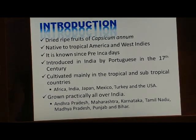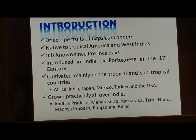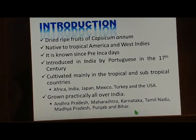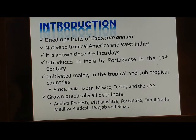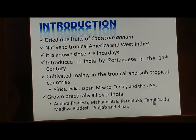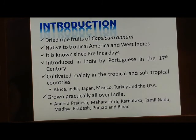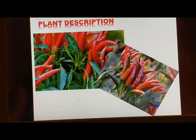Chilies are now cultivated mainly in tropical and subtropical countries like Africa, India, Japan, Mexico, Turkey, and the USA. In India, they are grown practically all over the country, but are extensively cultivated in Andhra Pradesh, Maharashtra, Karnataka, Tamil Nadu, Madhya Pradesh, Punjab, and Bihar. About one-fourth of total production comes from Andhra Pradesh, Maharashtra, Karnataka, and Tamil Nadu.